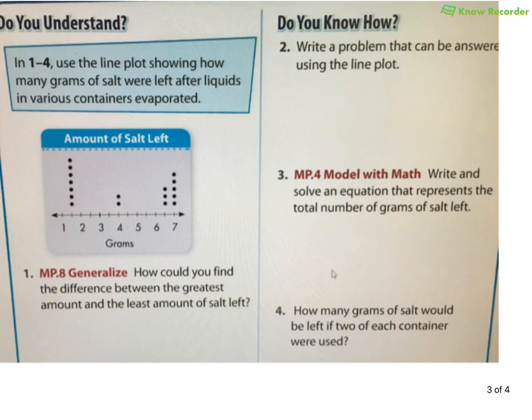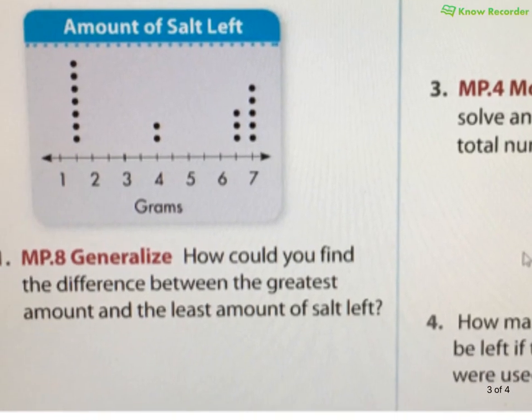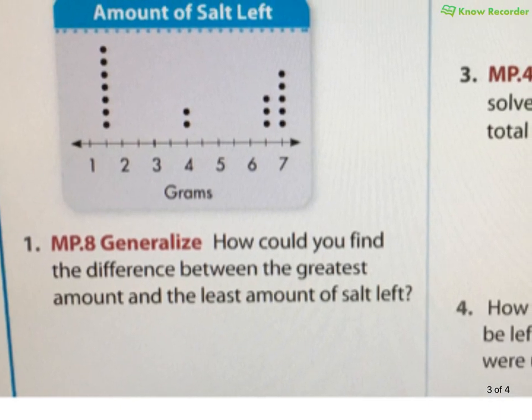So, in class, we talked about this line plot with the salt left. And they just asked for some generalizations about the greatest and the difference between the greatest and the least amount of salt left. So, they weren't asking you to add up all the stuff. They want to know the difference between, and this is basically the range, the greatest and the least. Well, my greatest value is seven. And then, when I look over here, I'm going to see that I have one, and then I have a fraction. How many skips do I take? One, two. So, that's one and a half. So, seven minus one and a half. It's going to be five and a half. Because seven minus one is six. Six minus a half is five and a half.